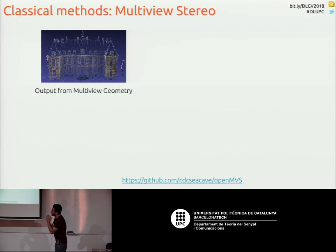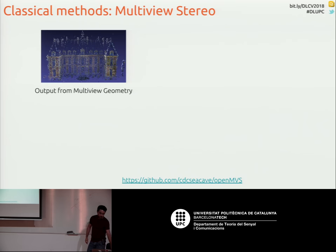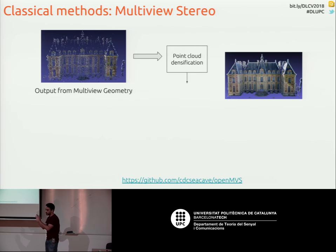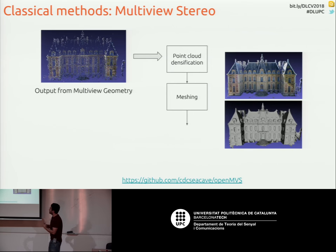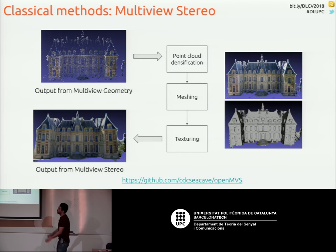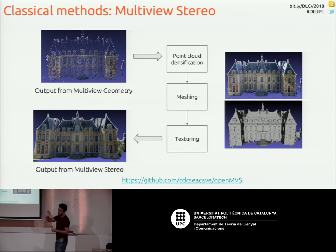If we want a more accurate shape from multi-view geometry, we use multi-view stereo. The first step is point cloud densification: given a set of images and sparse correspondences, we find dense correspondences and triangulate to get dense 3D points. The next step is meshing — going from point cloud to mesh by finding triangulations between points to define the surface. Finally, texturing, which is normally for visualization but also provides a dense color representation, which is important for analysis.